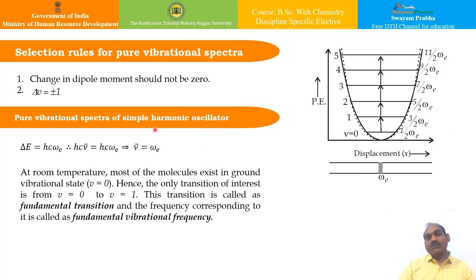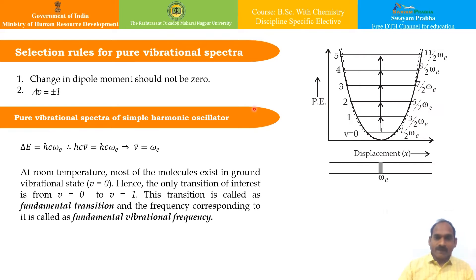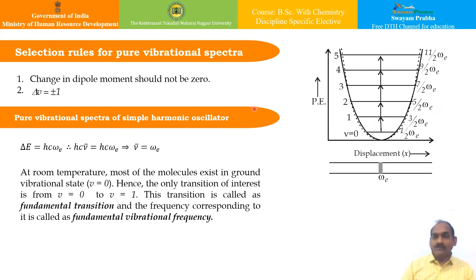Now, the selection rules for pure vibrational spectra: the first condition is that the dipole moment of the molecule must change due to vibration, because unless the dipole moment changes, we cannot get vibrational spectra. The molecule need not have a permanent dipole moment, but the change in dipole moment must not be zero. Secondly, the change in vibrational quantum number should be unity. Both conditions are written here.